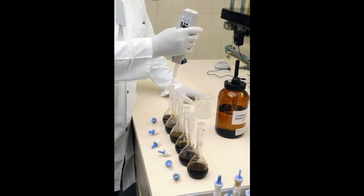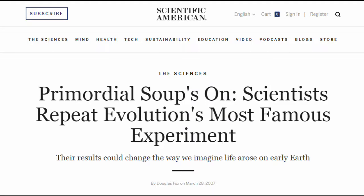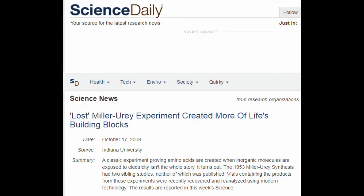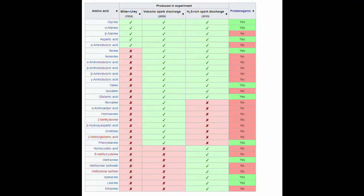This created a complex series of alternative experiments that were never explored to the full extent possible. In 2007 Miller died and new vials that have not been opened were found. Scientists were examining these sealed vials. The key here is the discovery of well over 20 different amino acids. The key to this is that Miller only found 5 the first time.